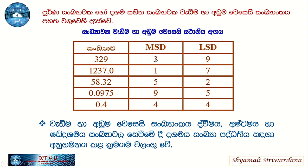For example, in the number 3, the MSD is 3 and LSD is 5. The positional value is based on powers of 10, such as 10 to the power of 37 or 10 to the power of 30. If you put the value of MSD, the LSD is 5.